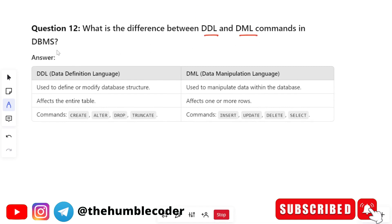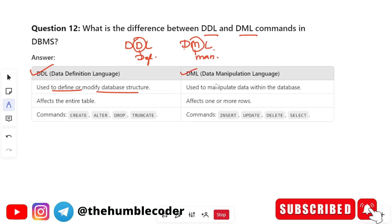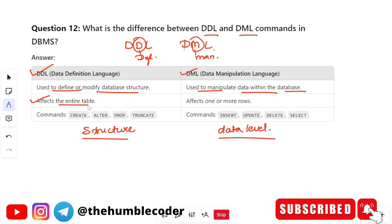What is the difference between DDL and DML commands in DBMS? DDL stands for Data Definition Language and DML stands for Data Manipulation Language. DDL is used to define or modify the database structure, whereas DML is used to manipulate data within the database. DDL modifies at the structure level while DML operates at the data level. DDL affects the entire table; DML affects one or more rows. DDL commands include CREATE, ALTER, DROP, and TRUNCATE; DML commands include INSERT, UPDATE, DELETE, and SELECT.